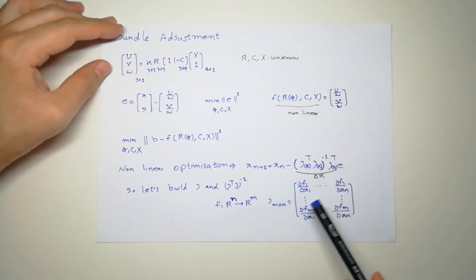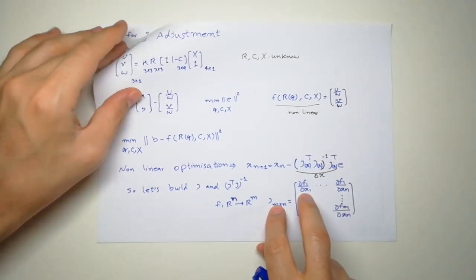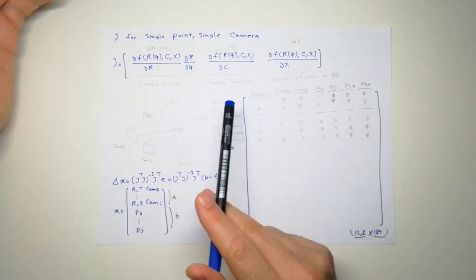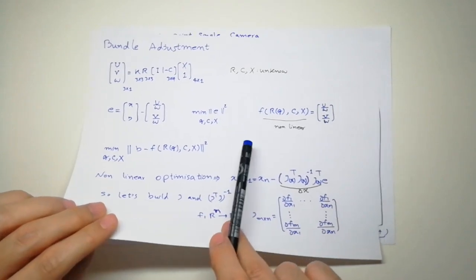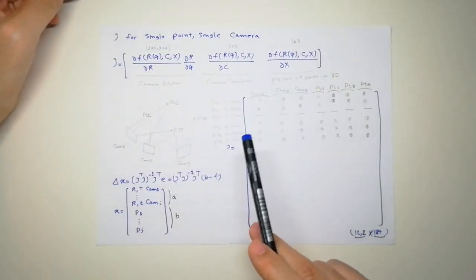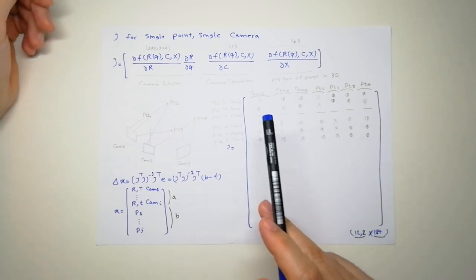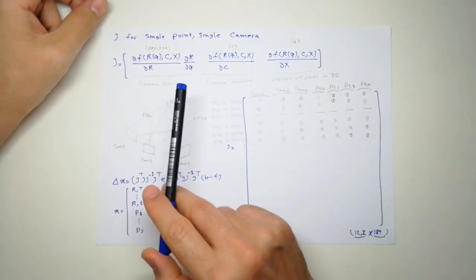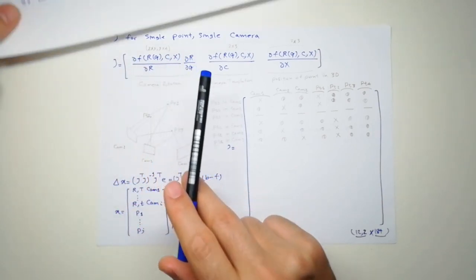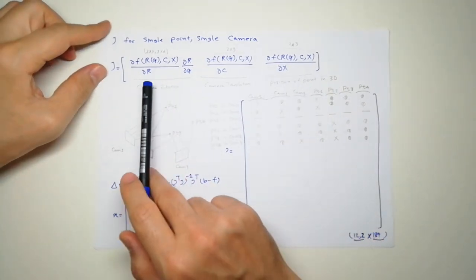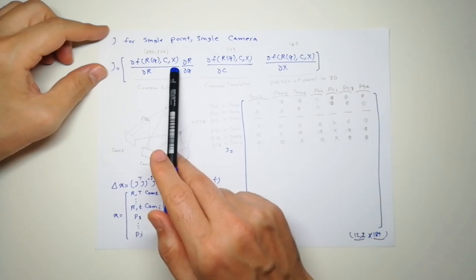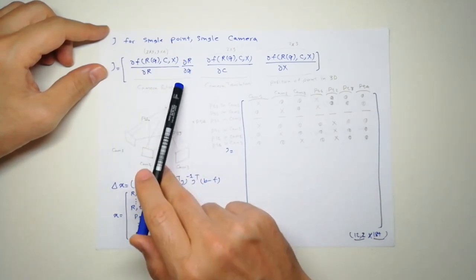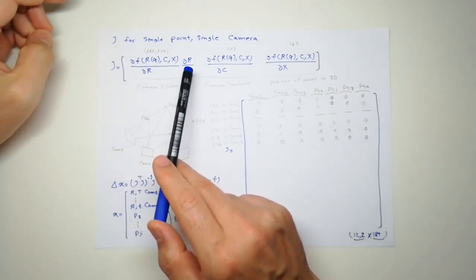Let's build J. The derivative of the first output relative to all variables — the variables are camera rotation, translation, and position of the point in 3D. Because every point gives us one U and one V (pixel values), we have two rows. For camera rotation we use the chain rule: derivative relative to the rotation matrix, and then rotation relative to the quaternion, so we have two rows for U and V.